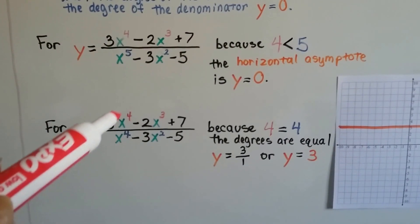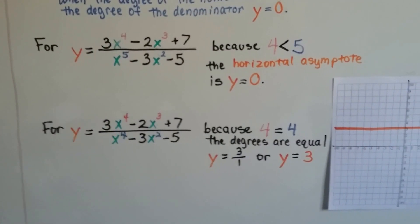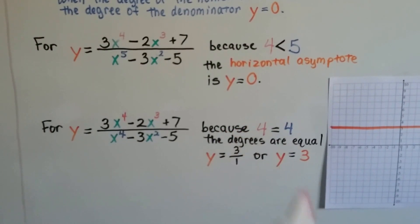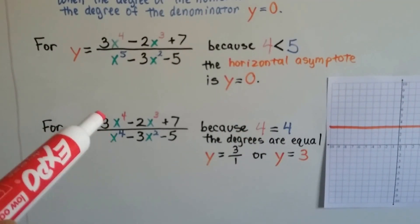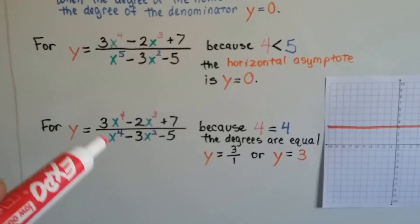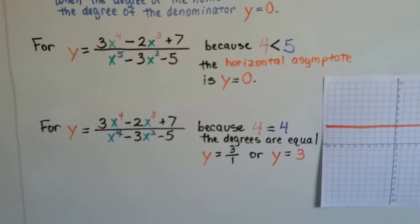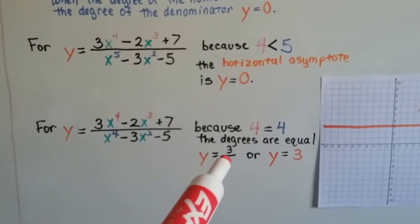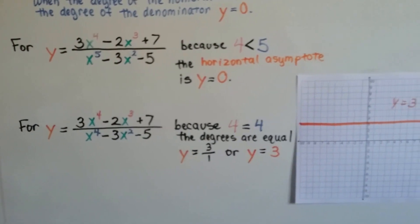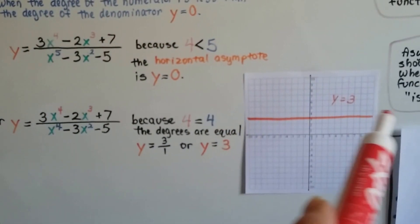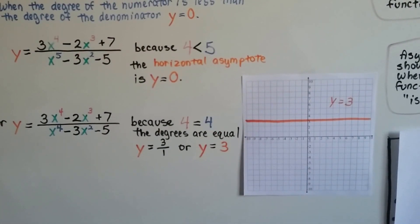Now, take a look here. We've got a 4 and a 4. So, now they're equal. The degrees are equal. We just divide. There's an invisible 1 here in front of this x to the 4th power, isn't there? It would be 3 divided by 1, or y equals 3, and then we would have our horizontal asymptote.